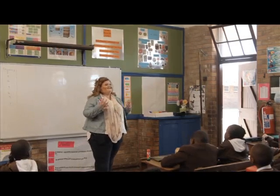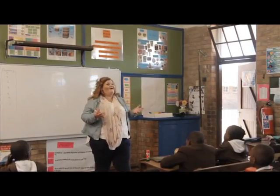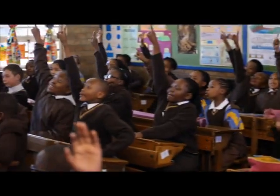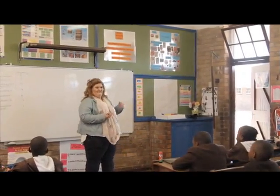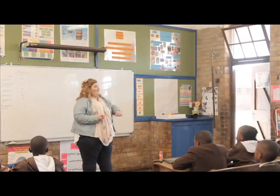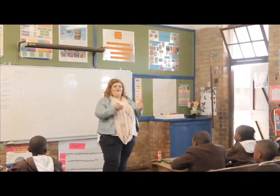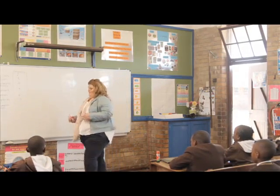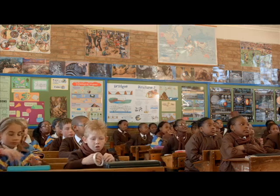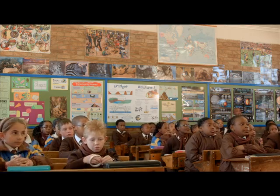They could count the total of those shapes, and that was the information we used for data collection. Who could give me a better word for information? Data. So actually what we did is data collection or information collection. Now there are different ways we can record or write information. The first way is just to write the frequency or the totals using numbers.